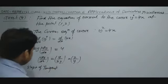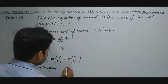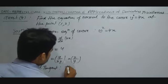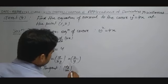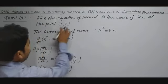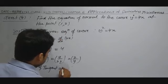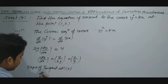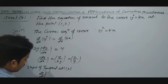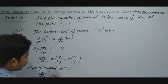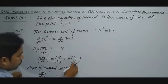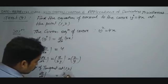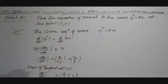Slope of tangent at the point (1, 2): dy/dx at (x=1, y=2) = 2/y. The value of y is 2, so the result is 2/2 = 1. This is the slope of the tangent.